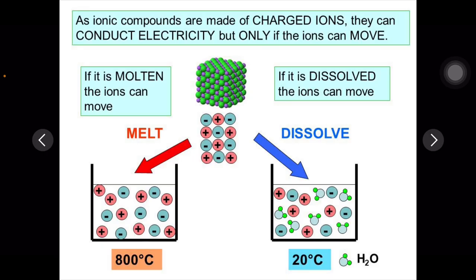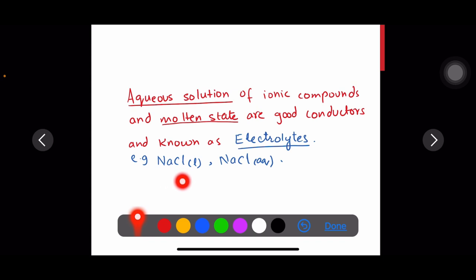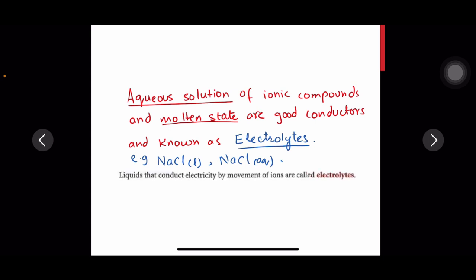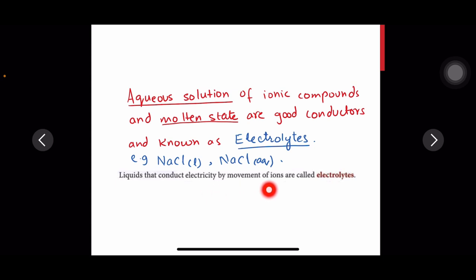However, ionic compounds when dissolved in water or on melting become very good conductors of electricity. Aqueous solutions of ionic compounds and molten states are good conductors and are known as electrolytes. For example, NaCl(l) — which is the molten form — and NaCl(aq) — which is the aqueous solution, dissolved in water form.